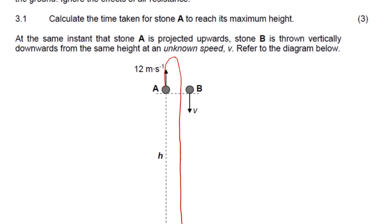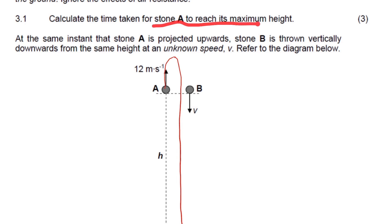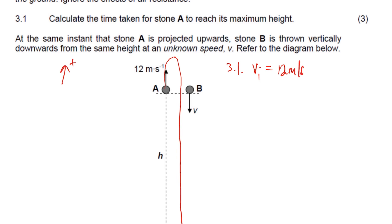Now let's look at the question. 3.1 says: calculate the time taken for stone A to reach the maximum height. What are the things we have for stone A? It's important to choose a direction — choose up as positive. Then the initial velocity is positive 12 meters per second. The final velocity at the maximum height is 0, and the acceleration is negative 9.8 meters per second squared.